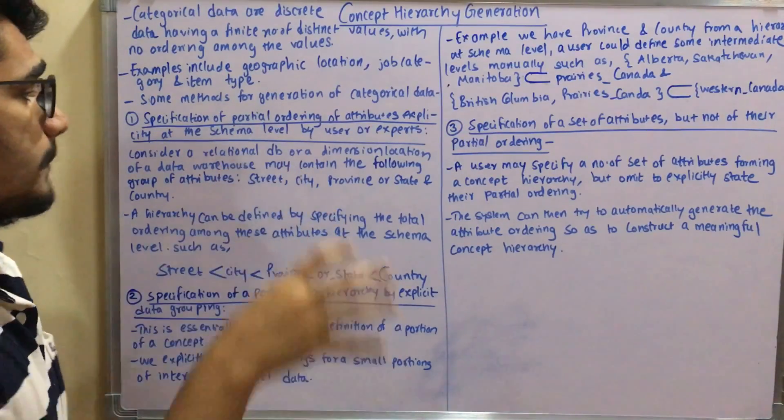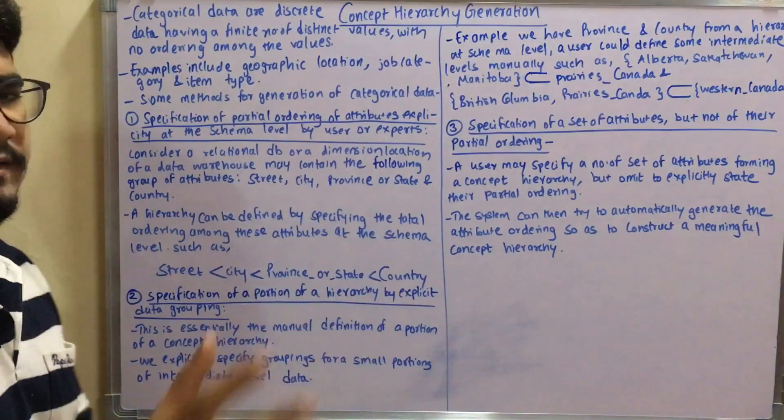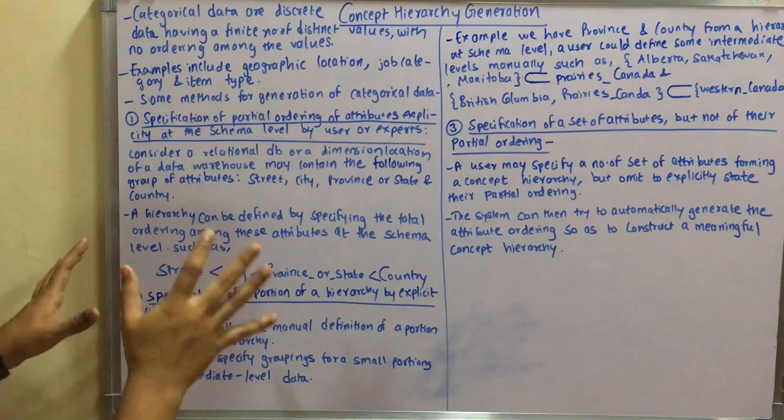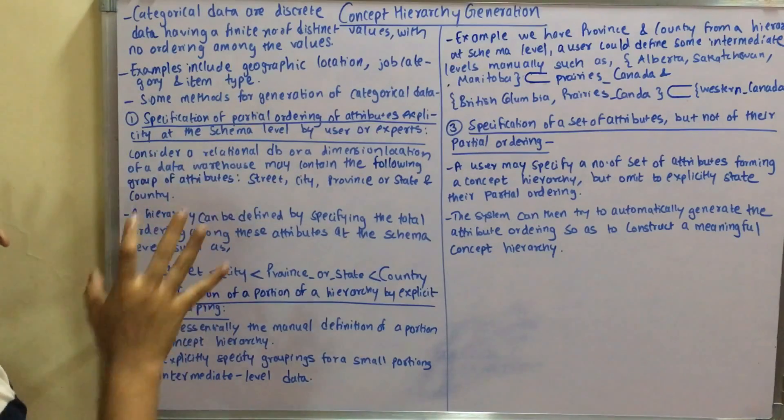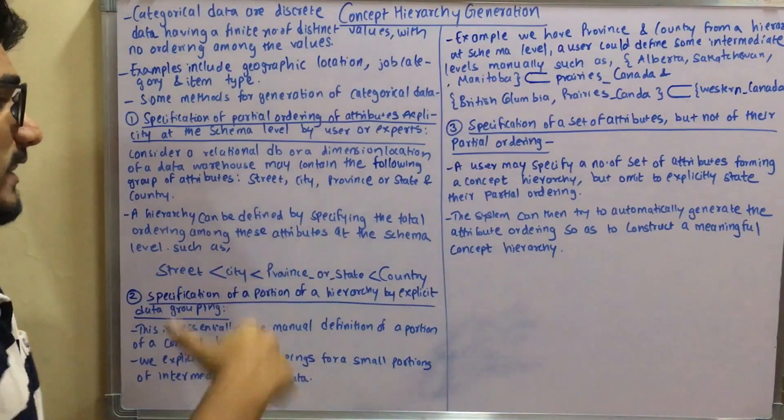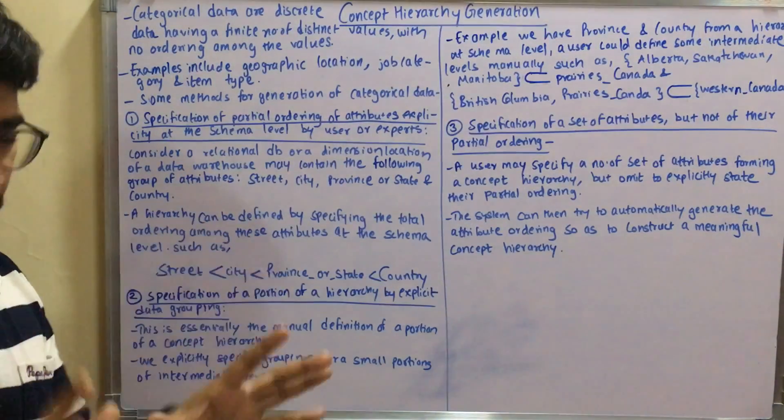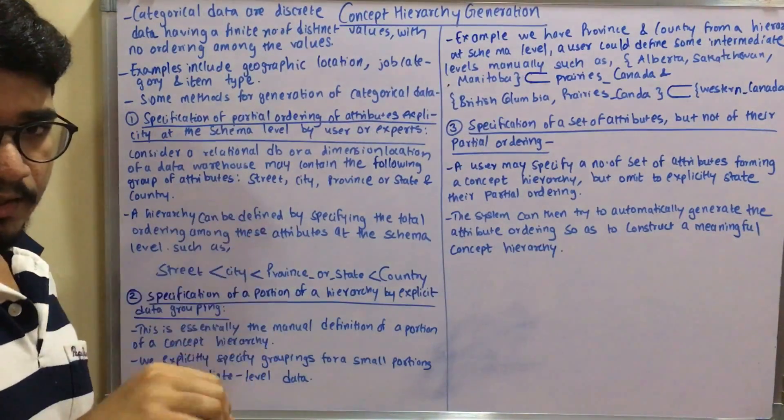Consider a relational database or a dimensional location of data warehouse. That data warehouse may contain the following group of attributes - random data like street, city, province, state, country, continent, etc.